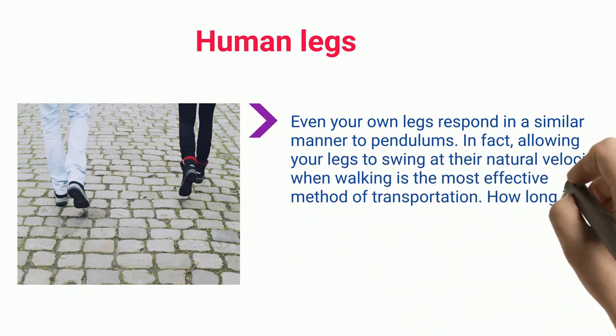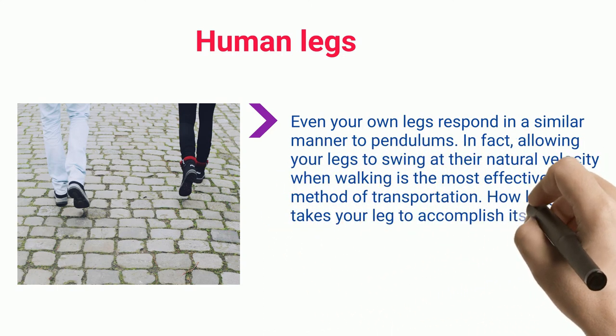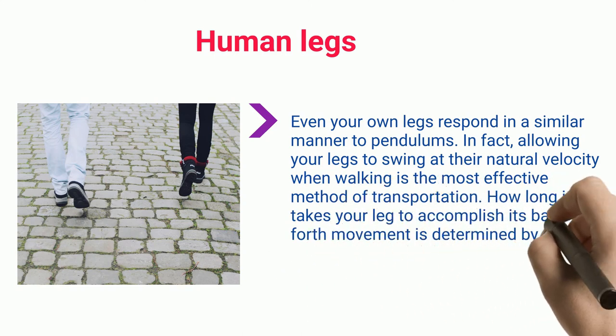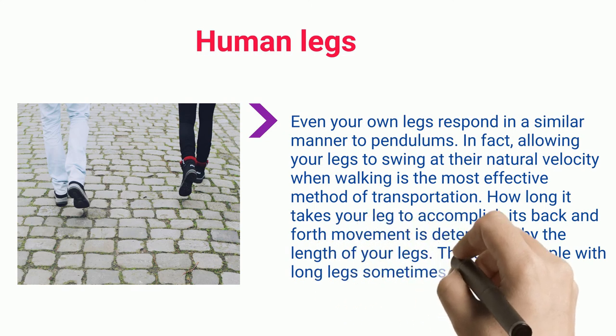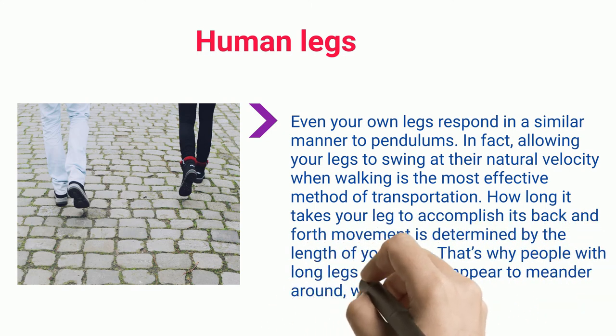How long it takes your leg to accomplish its back and forth movement is determined by the length of your legs. That's why people with long legs sometimes appear to meander around, while people with short legs appear to walk quickly.